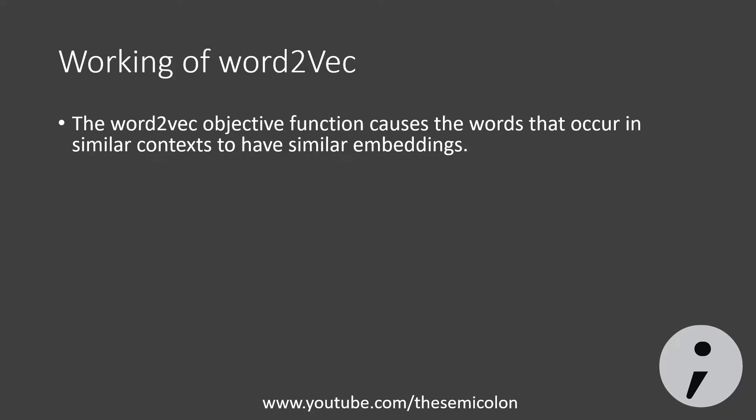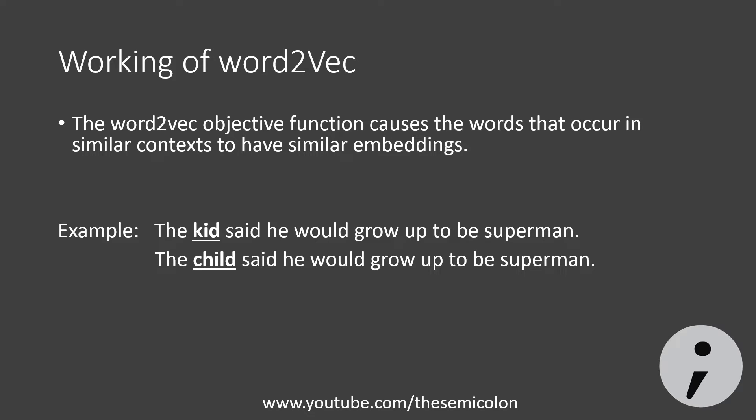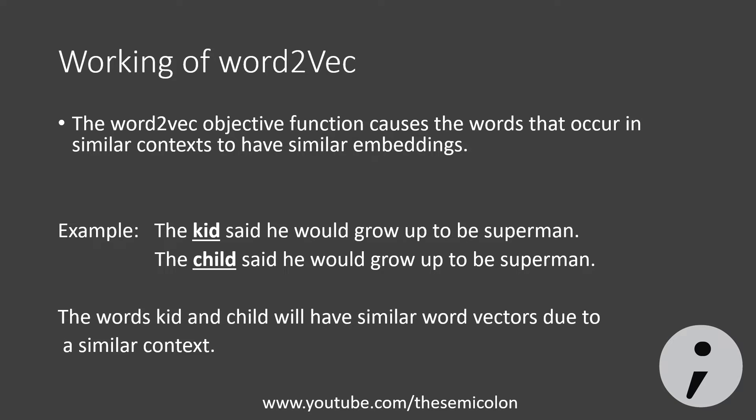Let's consider an example to understand it better. We have two sentences: 'The kid said he would grow up to be Superman' and 'The child said he would grow up to be Superman.' If you observe the words 'kid' and 'child', they are two different words with the same context. Since word2vec tries to make words with similar contexts have similar embeddings, 'kid' and 'child' will have similar vectors.